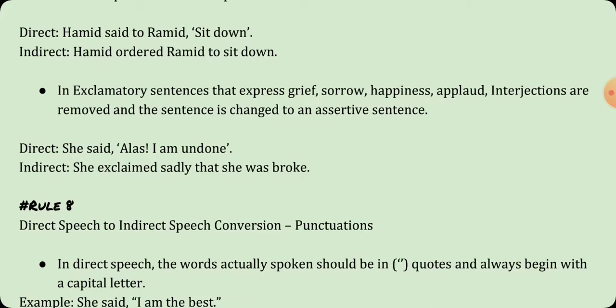In exclamatory sentences that express grief, sorrow, happiness, or applause, interjections are removed and the sentence is changed to an assertive sentence. For example, 'She said, alas, I am undone' in indirect speech becomes 'she exclaimed sadly that she was broke.'